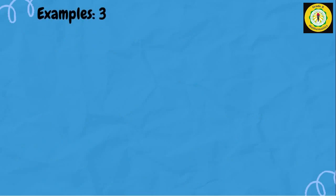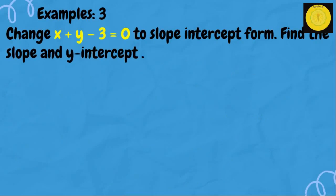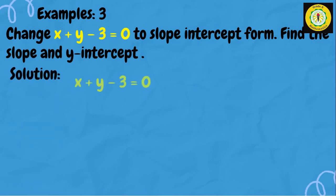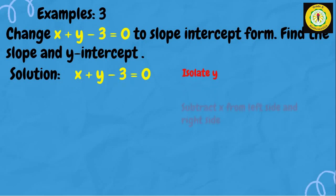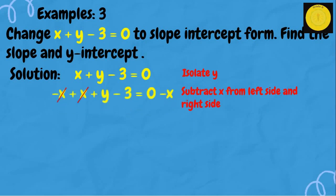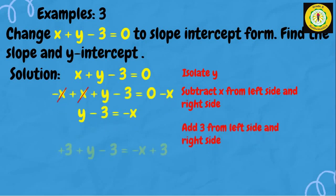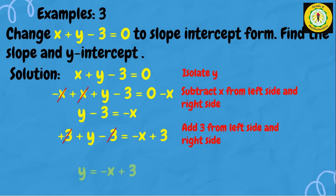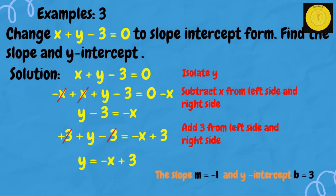Example number 3: change x plus y minus 3 equals 0 to slope-intercept form and find the slope and y-intercept. Our given is x plus y minus 3 equals 0. We isolate y by subtracting x from both sides, then adding 3 to both sides. The answer is y equals negative x plus 3. The slope is m equals negative 1 and the y-intercept is 3.